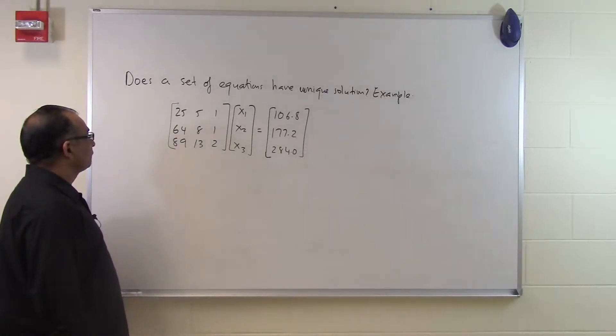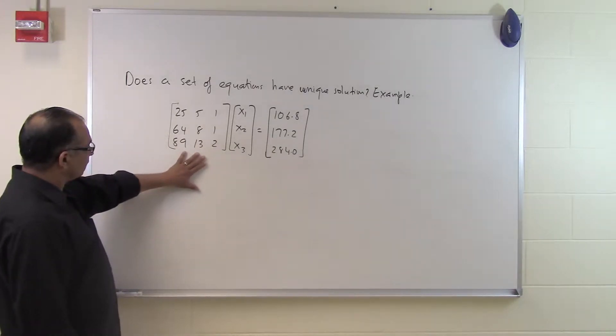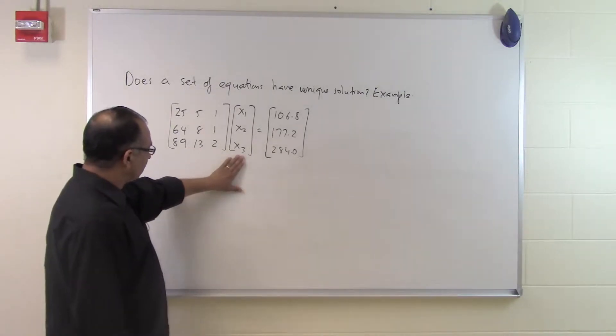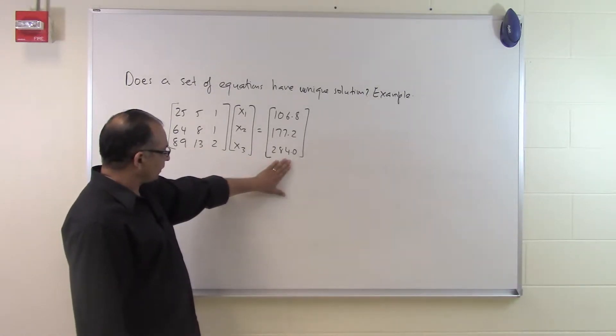In this segment we want to see if a set of equations has a unique solution or not. We are taking an example. So somebody is giving you three equations, three unknowns. This is the coefficient matrix, this is the solution vector, this is the right-hand side vector.